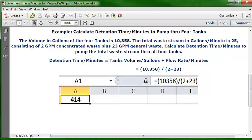with the flowing waste stream of 25 gallons per minute coming from two waste sources, one stream at 2 gallons per minute and the other at 23 gallons per minute, the 25 gallons per minute would be the flow rate. We hit enter, and the answer is 414 minutes.